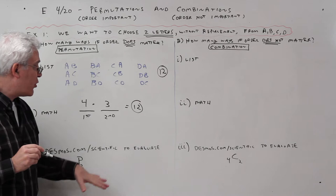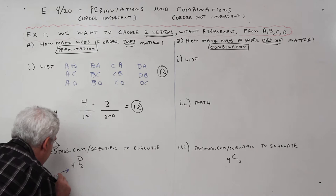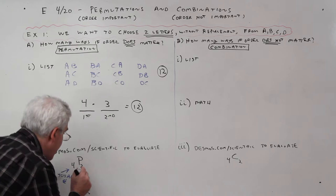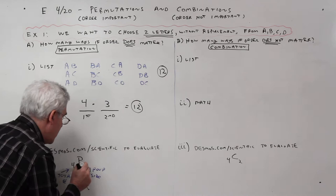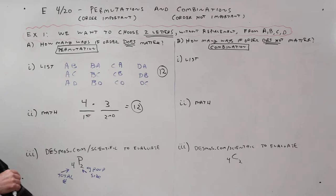I'm going to show you the calculator afterwards. But just to let you know, this is a permutation. So, this first number is the total number. And this second number is the group size. So, out of four total letters, let's arrange them in order in a grouping size of two. And I'll show you how to do that later. So, that's all of the permutation.